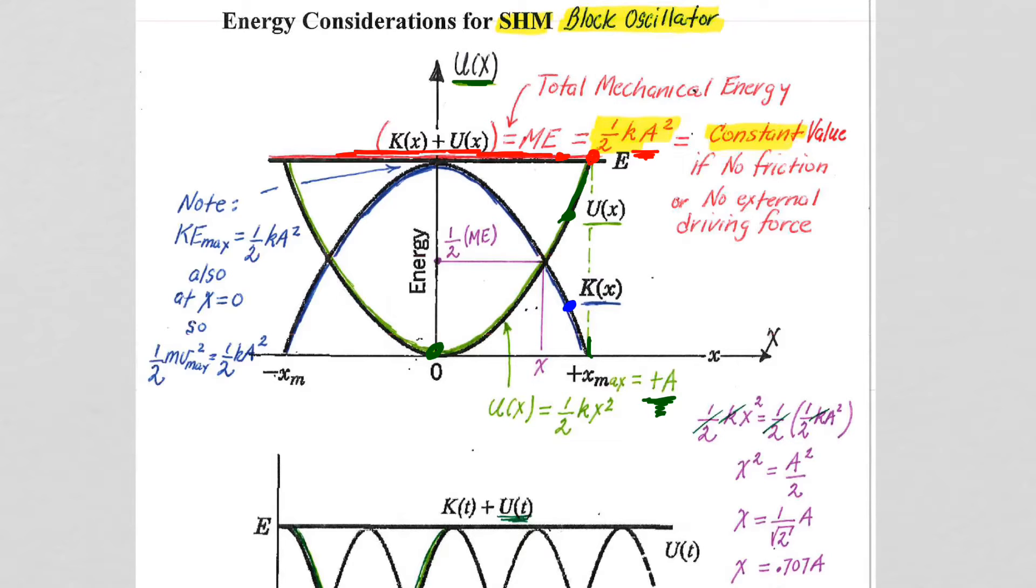That remains constant. So when we add the kinetic and the potential together at any point in time, the total energy remains constant. So when we've lost all of our potential energy, we have one-half ka squared of kinetic energy.